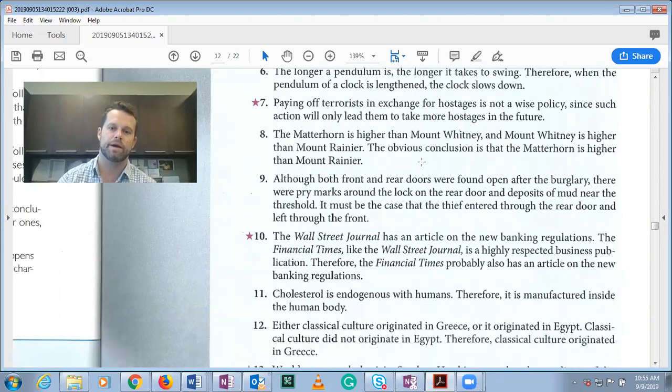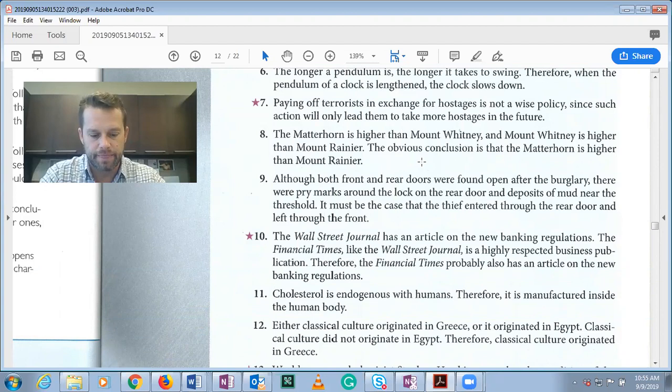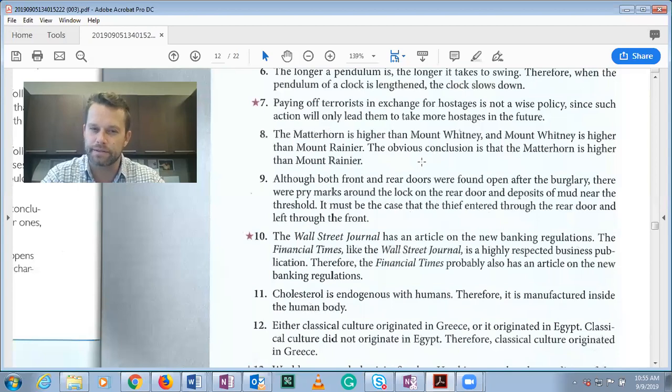The Matterhorn is higher than Mount Whitney, and Mount Whitney is higher than Mount Rainier. The obvious conclusion is that the Matterhorn is higher than Mount Rainier. This is a deductive argument.